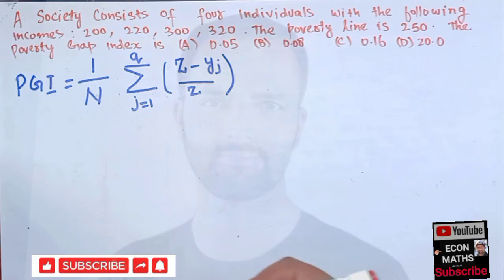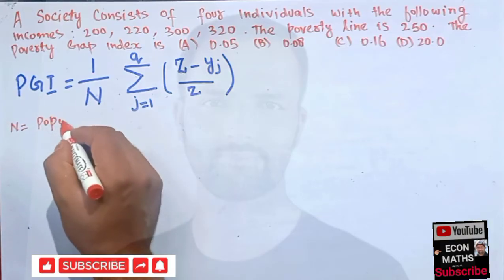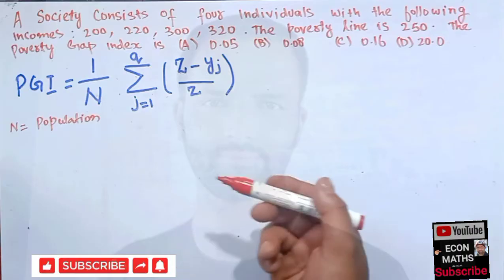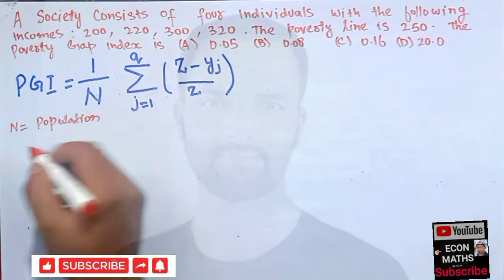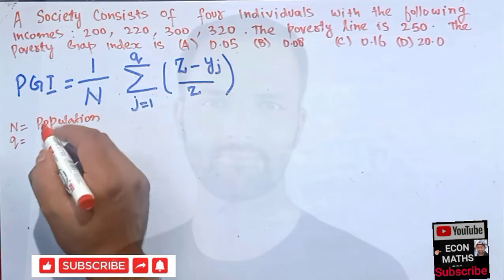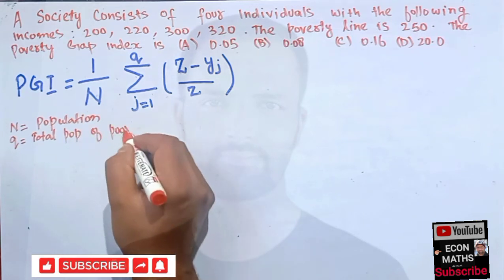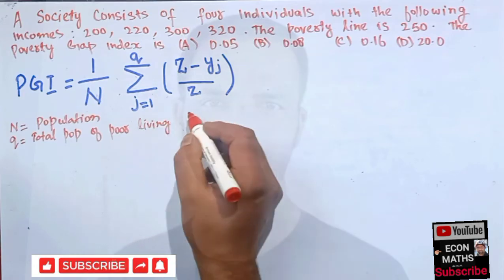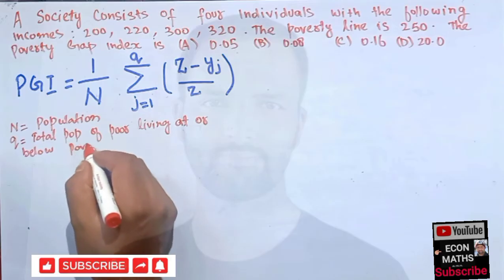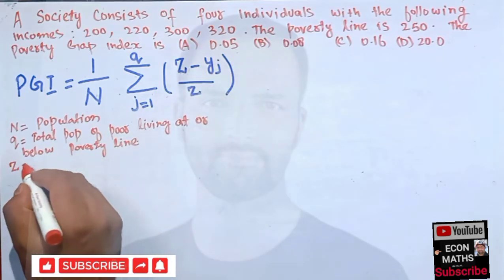Now, what do these symbols mean? n means the total population. q represents the total population of poor individuals living at or below the poverty line. z is the poverty line.